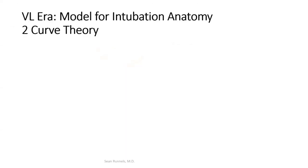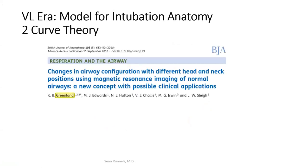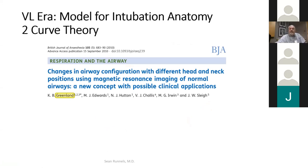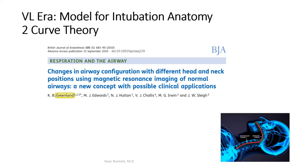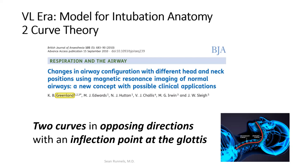Now we need to update our model — the two-curve theory, introduced by a Kiwi named Greenland. He did MRI work and looked at the geometry, writing a paper in the BJA in 2010. From what I can see, this paper didn't have a lot of impact at the practical level — it hasn't been well disseminated. But what he says is there are two curves in opposing directions, and there's an inflection point at the glottis. That's the two-curve theory. So we either need to flatten those curves with DL, or we need to look around them with VL.